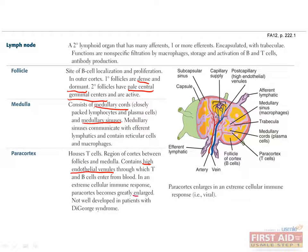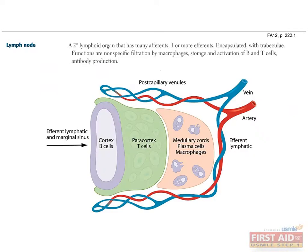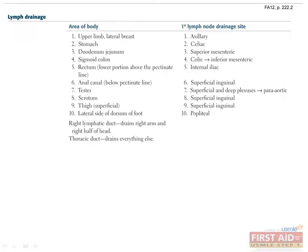Histologically, one sees enlargement of the paracortex during an immune response — because the immune response results in recruitment and proliferation of immune cells. Take a moment to reflect on the architecture of the lymph node and remind yourself of the cell types that occupy each region. Developing an appreciation for the lymphatic drainage of different regions of the body helps guide physical exams, especially in instances of infection, inflammation, and malignancy.